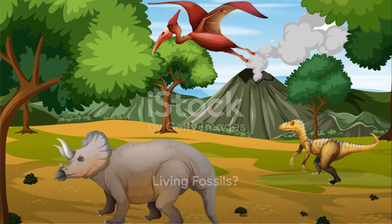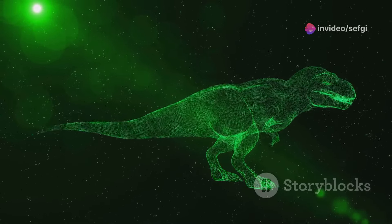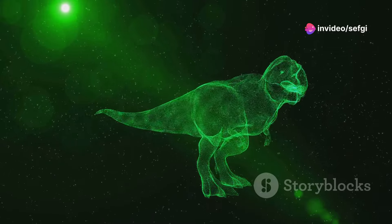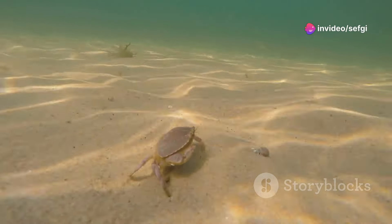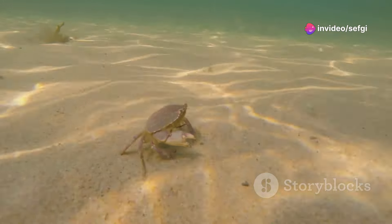Ever heard of a living fossil? Meet the horseshoe crab. These fascinating creatures have been around for more than 450 million years. That's right, they were scuttling around in the ocean when dinosaurs roamed the earth. Despite their name, horseshoe crabs aren't actually crabs or even crustaceans. They're more closely related to spiders and scorpions. Their hard, horseshoe-shaped shells protect them from predators, and they have a suite of eyes around their bodies to help them navigate their environment.